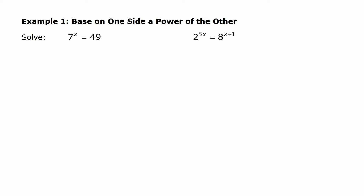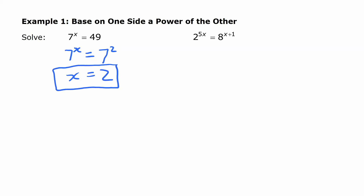The strategy we're using is: if we can write the expression on each side using the same base, then if the bases are the same, the exponents have to be the same. You can probably see already that x is going to be 2 — you're thinking that 7 to the power of something is 49, and 49 is 7 squared. So if you have 7 to the power of x equals 7 to the power of 2, then x has to be 2. That's the solution.